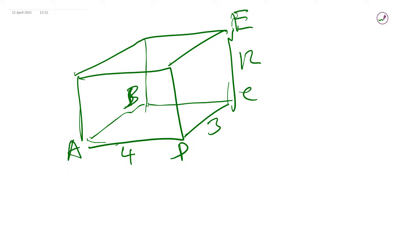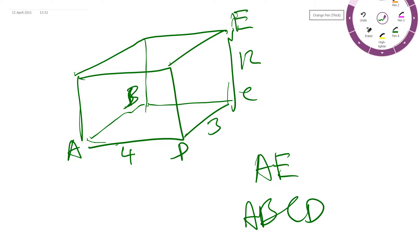And I want the angle between AE and the plane A, B, C, D. The angle. So let me pick another color. Let's say orange. Where that is, so that's our line.